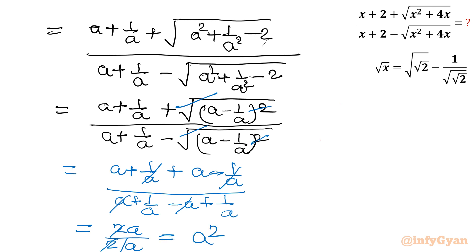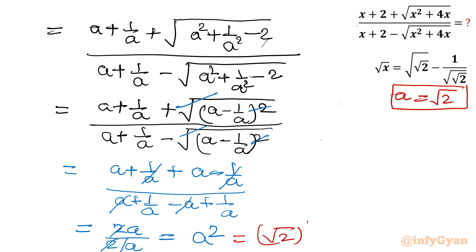The final result is a². Our substitution was a = √2, so the answer becomes (√2)² = 2. This is our answer for the first problem.